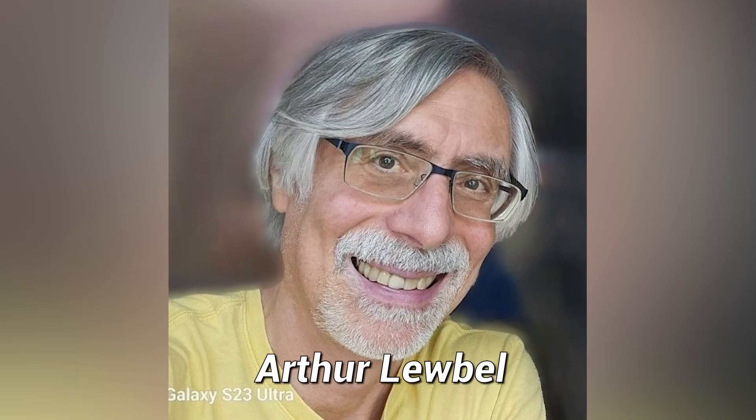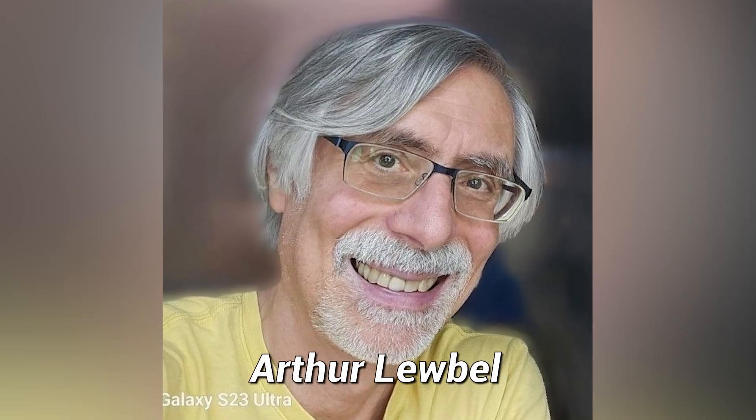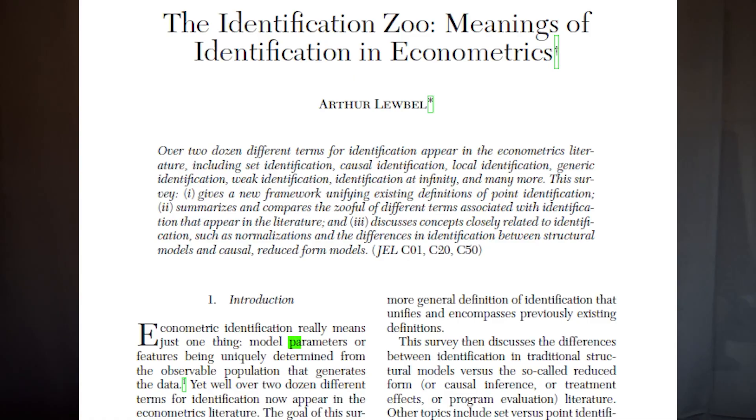Arthur Lubel, a renowned econometrician from Boston College, put it best when he said that identification is about whether the question that we want to answer is in principle even answerable, even if we had data from the population at an infinite sample size. Formally, the definition we'll use is that a parameter is identified if it's uniquely determined by what we can observe about the population.